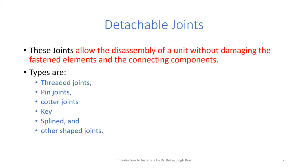Detachable joints are the third classification of fasteners. These joints allow the disassembly of a unit without damaging the fastened elements and the connecting components. Types include threaded joints, pin joints, cotter joints, keyed joints, splined joints, and other shaped joints.